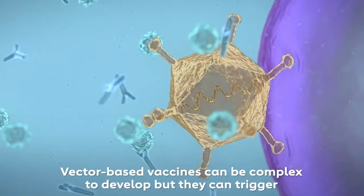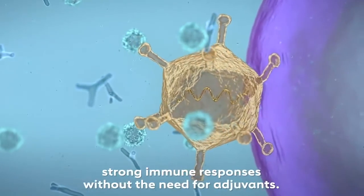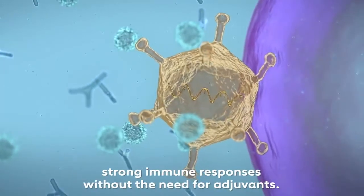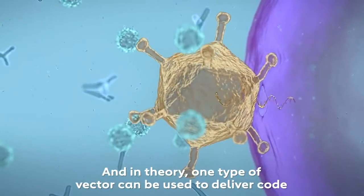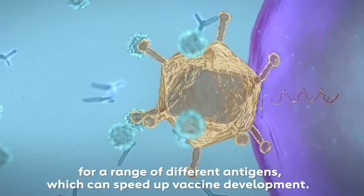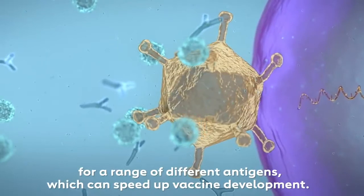Vector-based vaccines can be complex to develop, but they can trigger strong immune responses without the need for adjuvants. And in theory, one type of vector can be used to deliver code for a range of different antigens, which can speed up vaccine development.